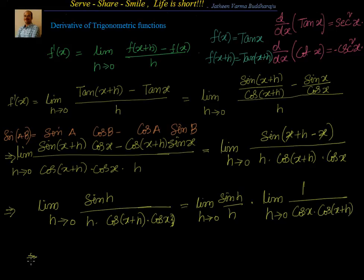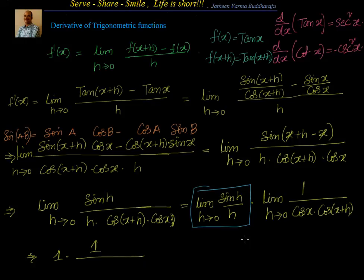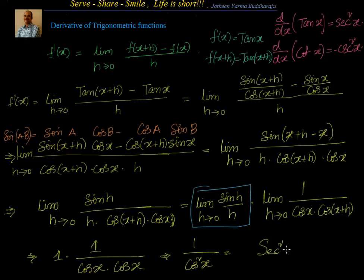Substituting h = 0: we know sin(x)/x as x→0 equals 1, so that becomes 1. Then 1 divided by cos(x)·cos(x), which is 1/cos²x, equal to sec²x. So the derivative of tan x is sec²x.